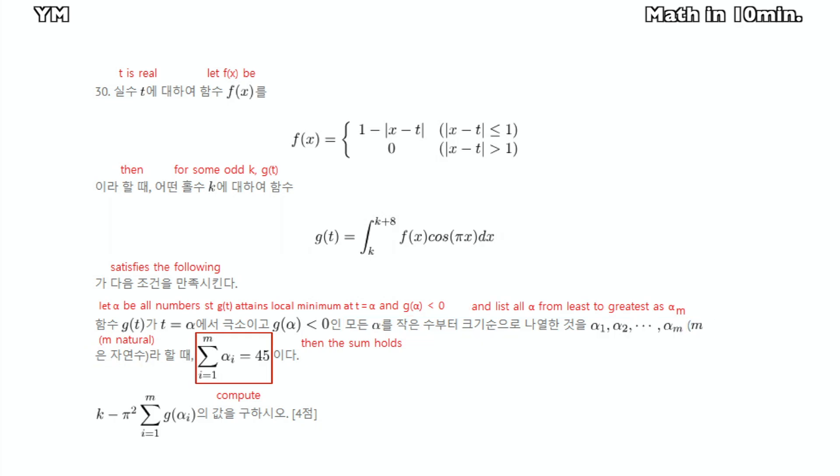Then sum of all alphas are 45. What we need to find is k minus pi squared times sum of all local minimums.